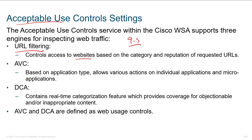URL filtering controls access to websites based on category, so you don't need to know every single URL. If you want to block a certain category of website, there are going to be new URLs every day that could be part of that category. Keeping up with the internet could be a lot of work for administrators, so by leveraging URL filtering and the intelligence gathered from ratings associated with each site, we can make intelligent decisions.